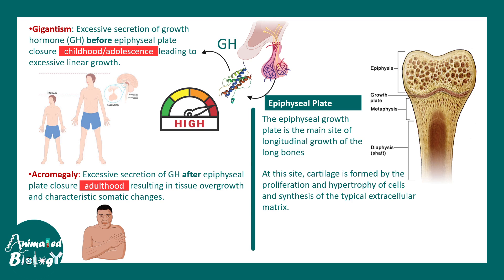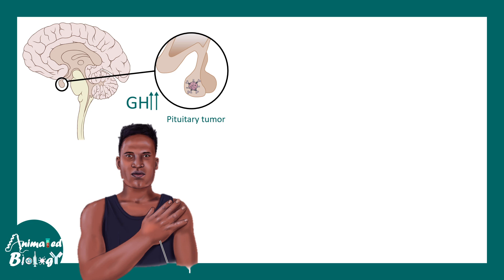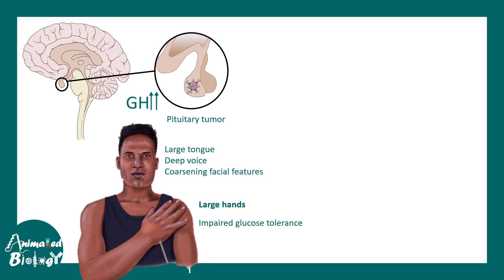Our focus is acromegaly. In acromegaly, increased growth hormone secretion may be due to a pituitary tumor. These individuals have characteristic features including an extended jaw, a very distinct jawline, large tongue, deep voice, coarsening facial features that become more prominent with age, large hands, impaired glucose tolerance, and abnormally high IGF levels in the blood.